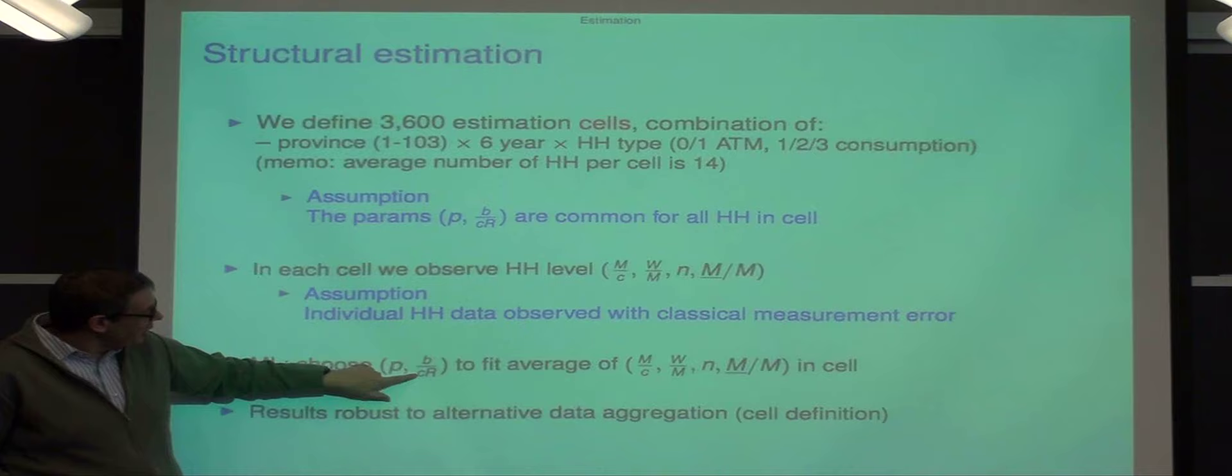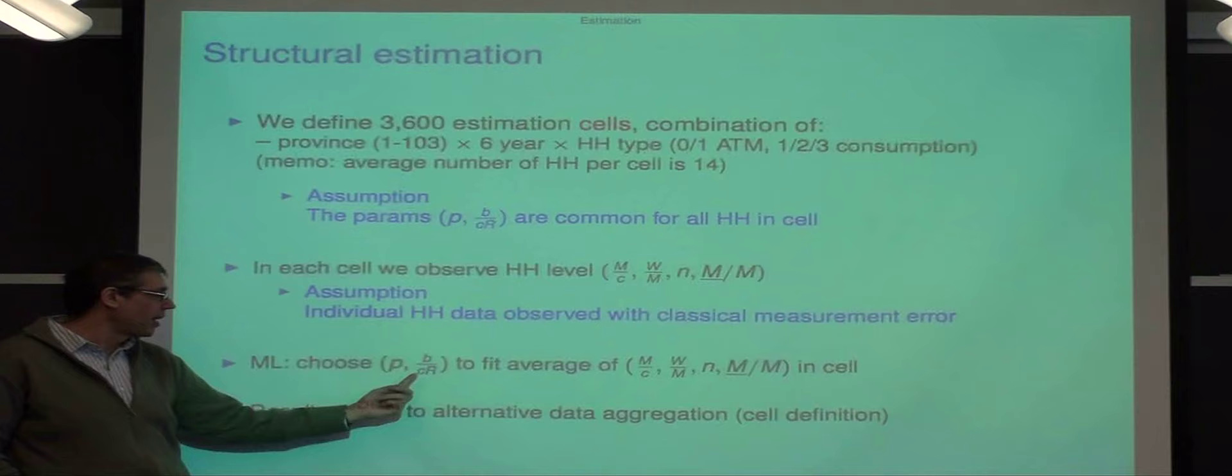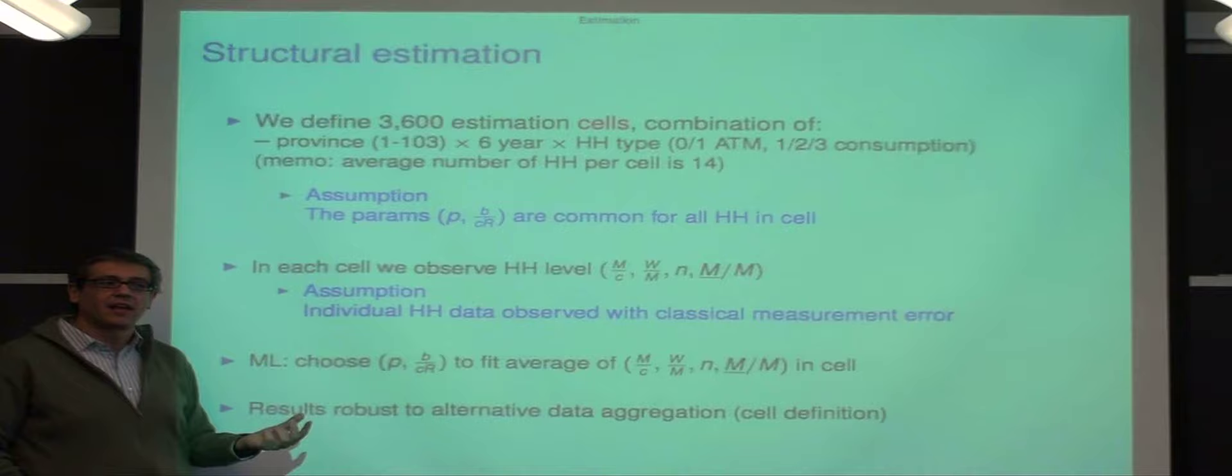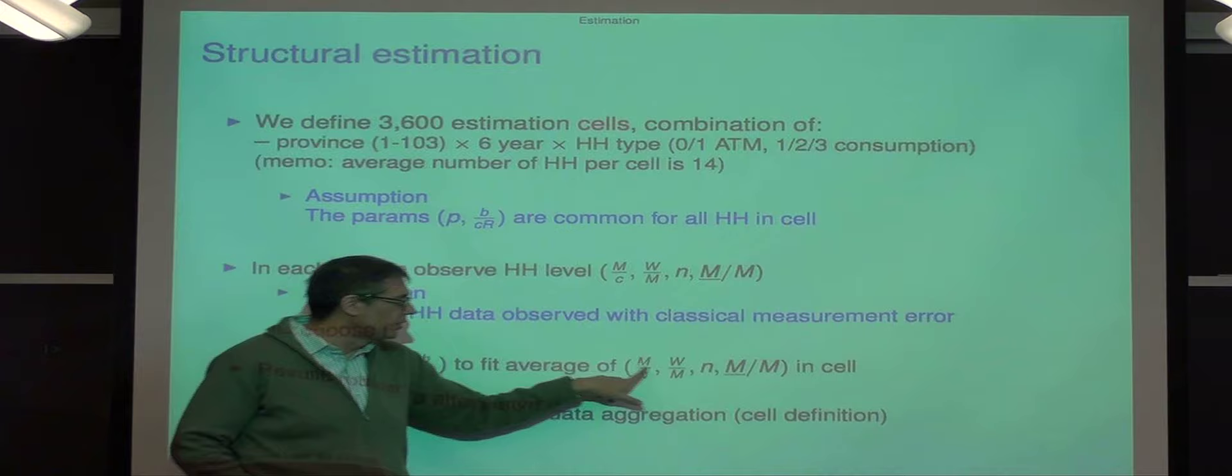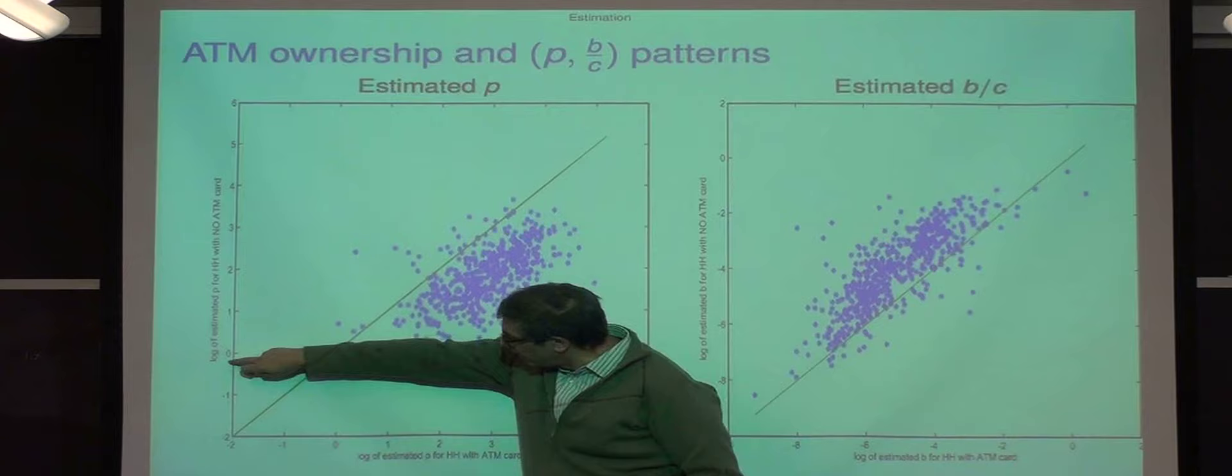Now it is true, we have observations of C, and we have observations of R, and hence if we estimate this number, then we could divide by the product of C times R and obtain B. But really what the model, the predictions of the models are, given P and B over C over R, give us predictions for all these variables, which we measure in the data.